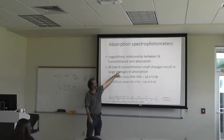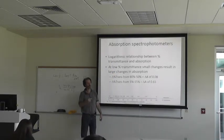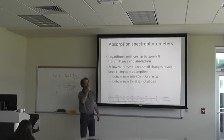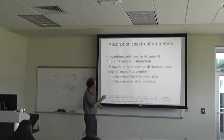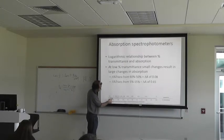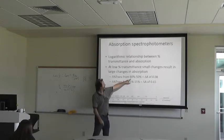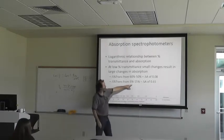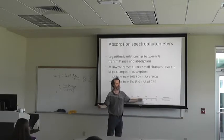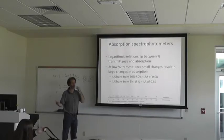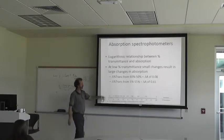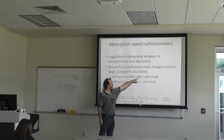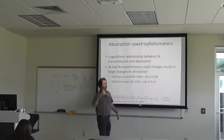At low percent transmittance, small changes will result in large changes in absorbance. Those machines have variability built in — noise in the machine. So any variability, if you have low percent transmittance, it's absorbing a lot — really high absorbance. If you go from 5% to 15% transmittance, the change in absorbance is 0.65. That's almost one whole absorbance unit — a huge change in your measured concentration, and that could just be 10% noise. Versus 60% to 50%, you get a change in absorbance of only 0.08 — a much more negligible change.